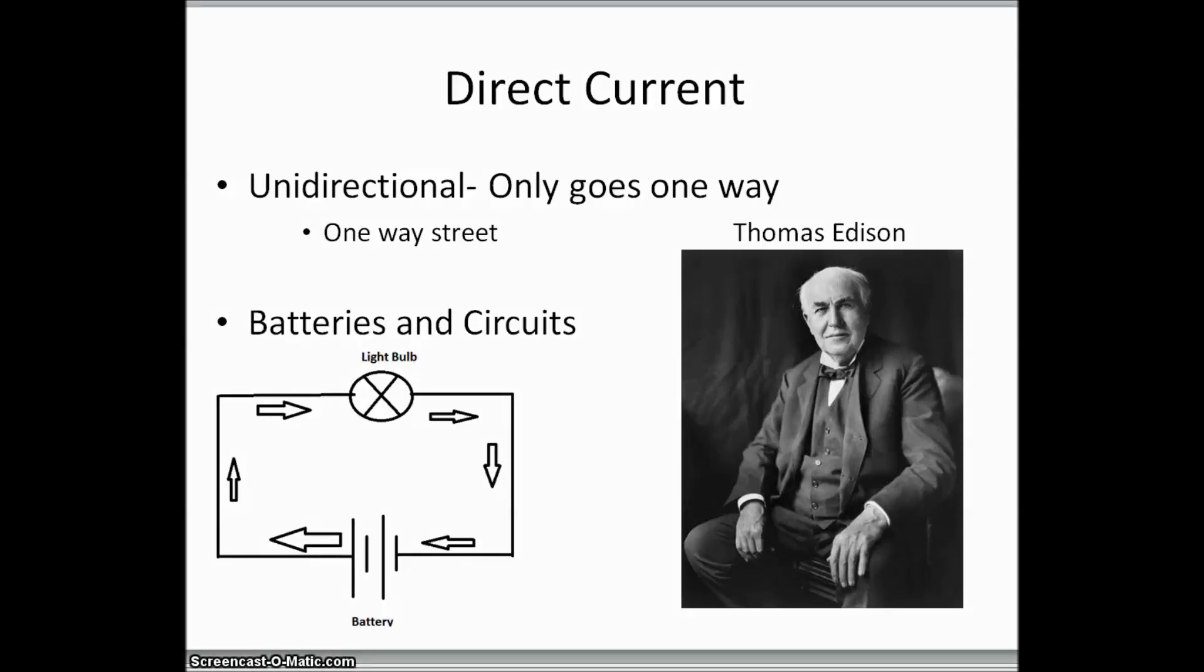The first current we're going to talk about is direct current. Direct current is what we call unidirectional, and what that means is it only goes one way. It's like a one-way road or a one-way street. This is just like batteries and circuits, or anything with your remote controls and your Xbox, Playstation, anything like that.